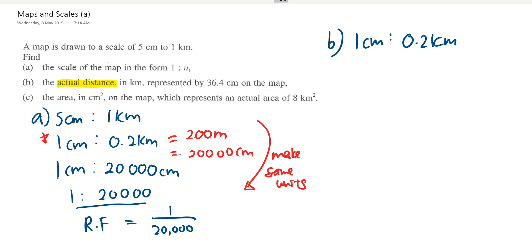1 cm is to 0.2 km. Now I want 36.4 cm is to... So I multiply by 36.4 on both sides and I will get 7.28 km. That's my answer for the second part, easy to get that.